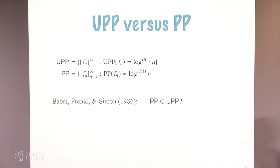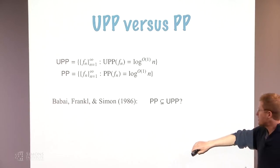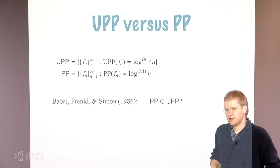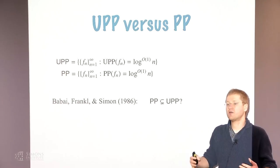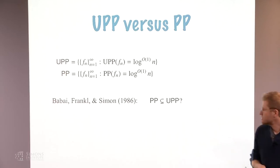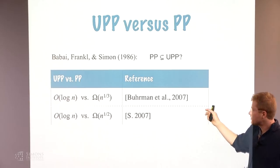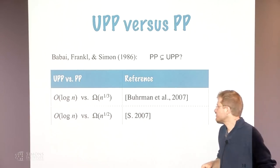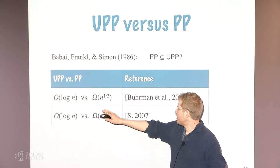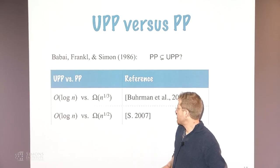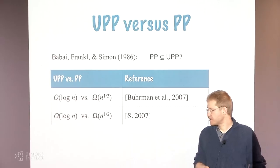Both classes are communication complexity analogs of PP in Turing machine complexity. In 1986, Babai, Frankl, and Simon in their fundamental paper on communication complexity classes posed the problem of separating these two classes. By definition, computing with weakly unbounded error gives less power than unbounded error — the question is whether the separation is strict. This was answered in 2007 in two independent works with different functions and gaps: log N versus N to the one-third, and log N versus root N.